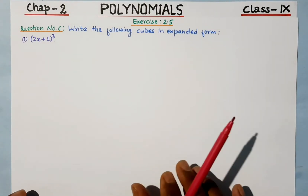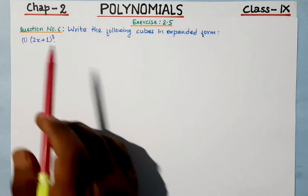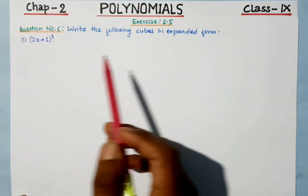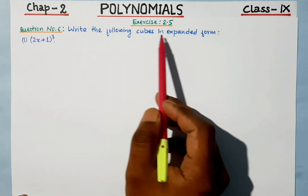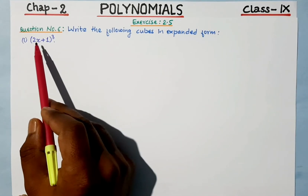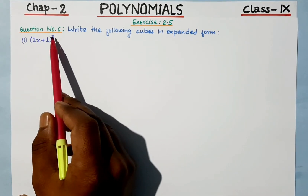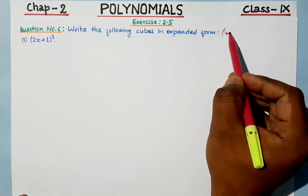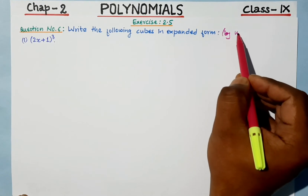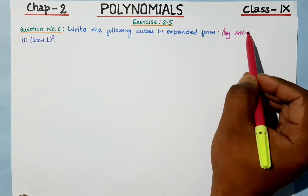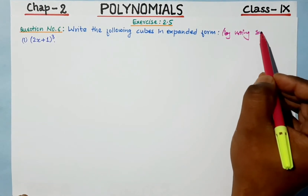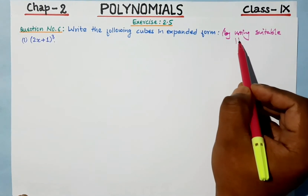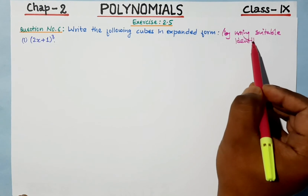Hello, my dear children, welcome to our math class. In this class we will solve question number six from Exercise 2.5. We have to write the following cubes in expanded form. Here we have (2x + 1) whole cube, and we have to write it in expanded form by using a suitable identity.